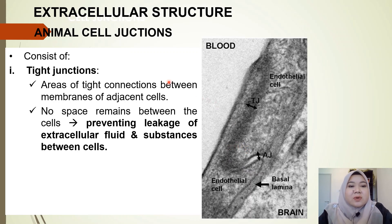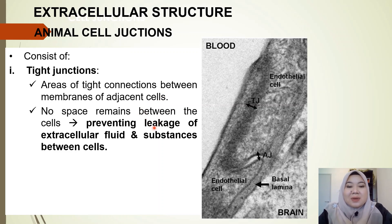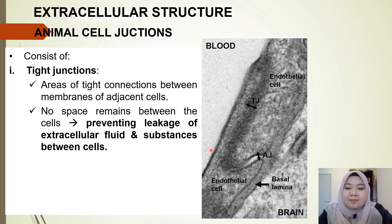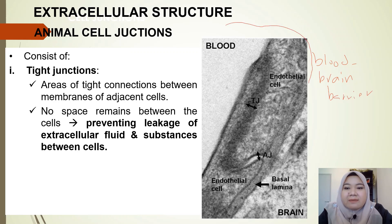Now we look at cell junctions in animal cells. The first is the tight junction. Tight junctions are areas of tight connections between membranes of adjacent cells — they are so tight that there is no space remaining between the cells. One significant function is to prevent any leakage of extracellular fluid and substances between cells. An example is the blood-brain barrier.